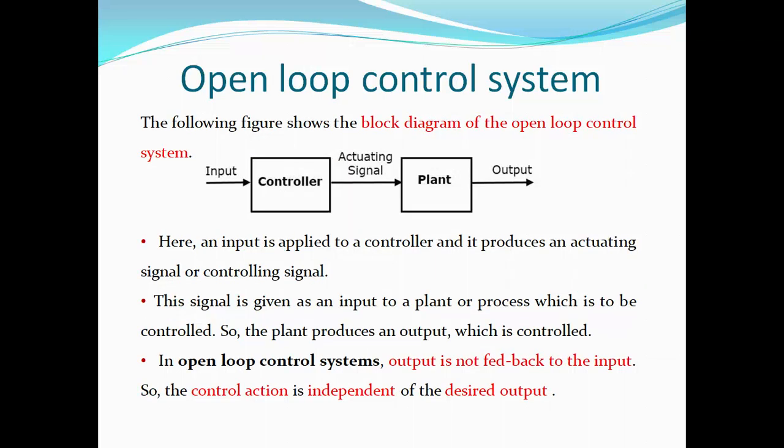This is the basic block diagram of an open loop control system. It has two components: the first one is a controller and the second one is the plant or process. Here, an input is applied to a controller and it produces an activating signal or controlling signal. This signal is given as an input to a plant which is controlled. The plant produces an output which is controlled. The output is not fed back to the input in an open loop system, so the control action is independent of the desired output.